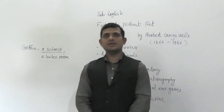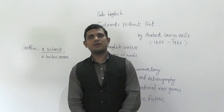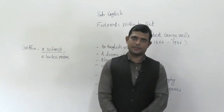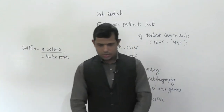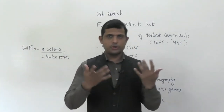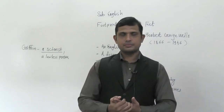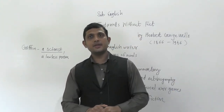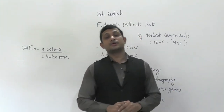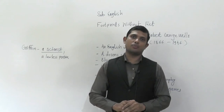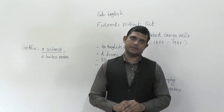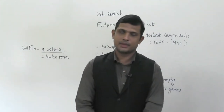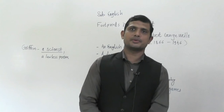This is the first half of the lesson. In the next part we will see what exactly happened with Griffin. For today, you have to read the lesson twice and then write the flowchart of the lesson. I hope you have understood the lesson — thank you very much.